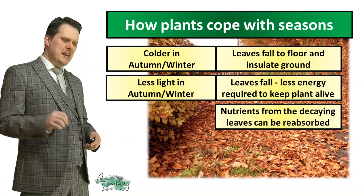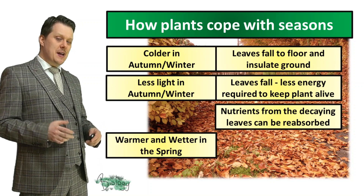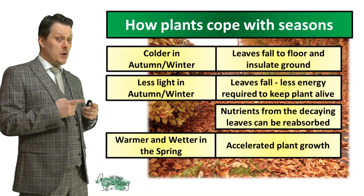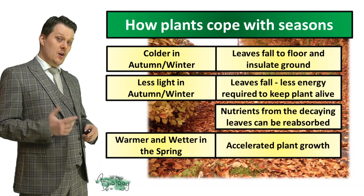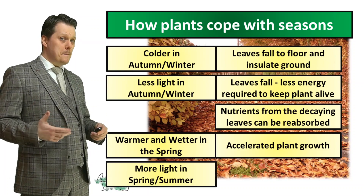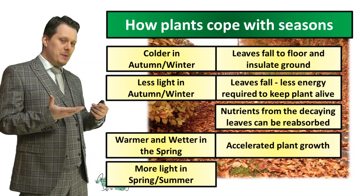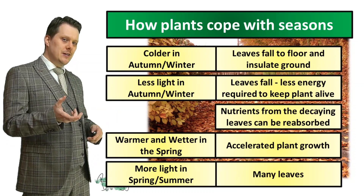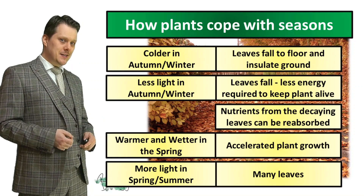When it gets a little bit warmer and wetter in the spring, our plants tend to have a bit of a growth spurt and grow all their leaves back. Also in spring and summer there's a lot more light, and because the plant had this growth spurt there are a lot more leaves, so the plant can carry out more photosynthesis.